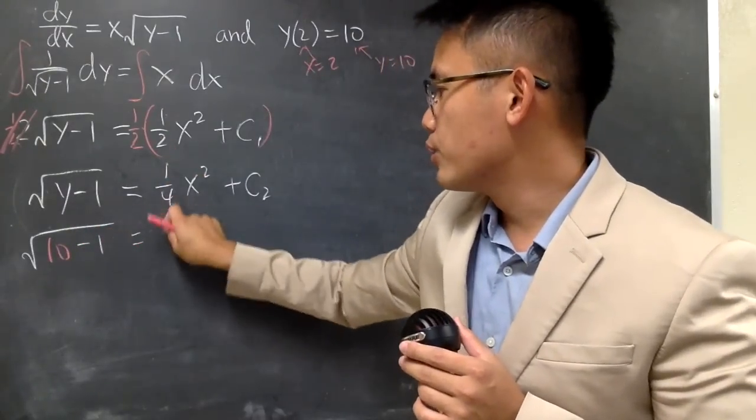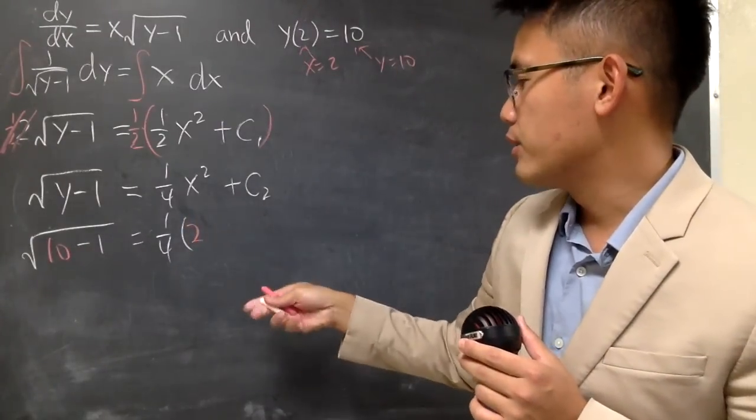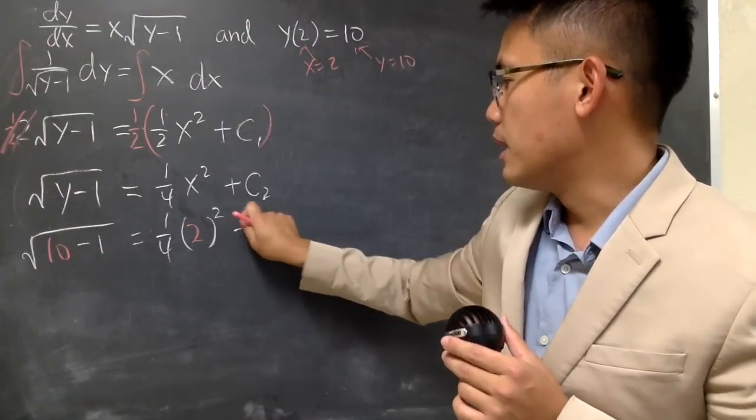And that's equal to 1/4 and the x is 2, and don't forget to square that and plus c2.